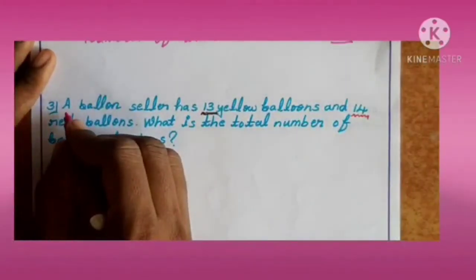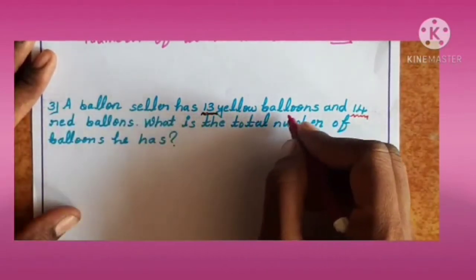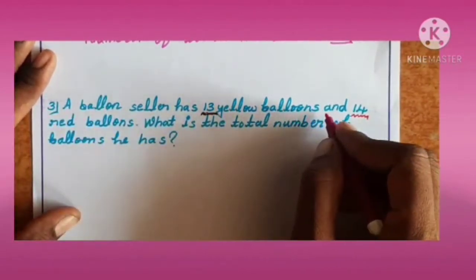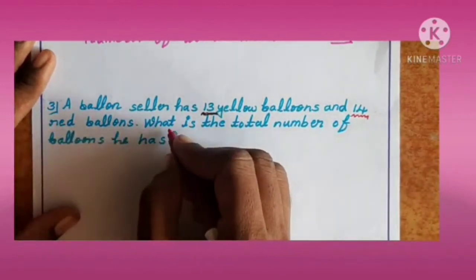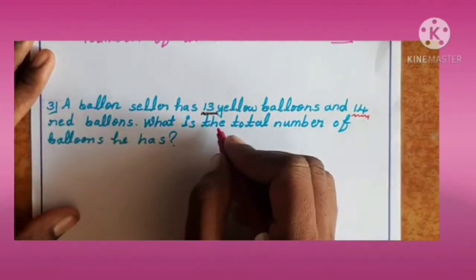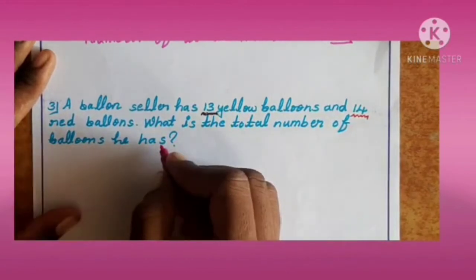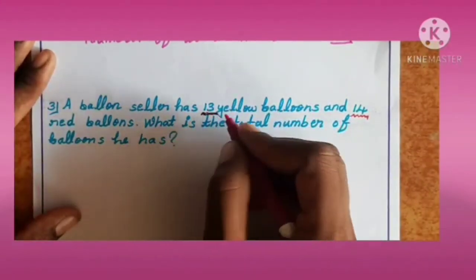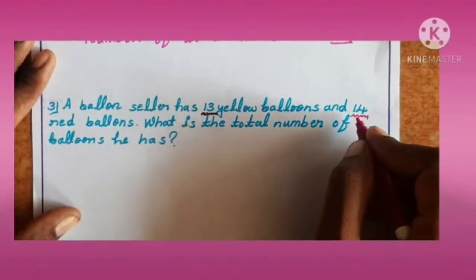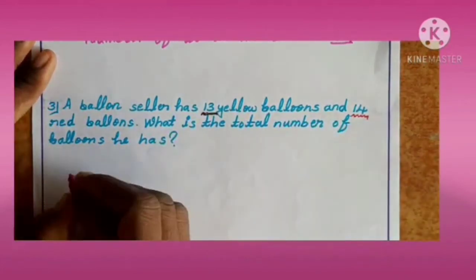Next, third one: a balloon seller has 13 yellow balloons and 14 red balloons. What is the total number of balloons he has? So you can add 13 plus 14. First, form the sentence.